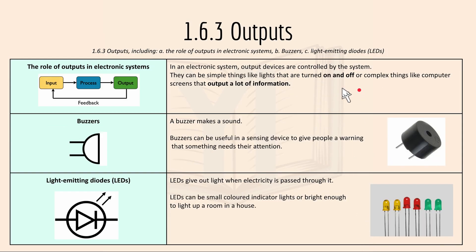Then we have 1.6.3, the roles of outputs: buzzers and LEDs. In an electronic system, output devices are controlled by the system. There can be simple things like lights that are turned on and off, or complex things like computer screens that output a lot of information. Buzzers make a sound and can be useful in a sensing device to give people a warning that something needs their attention.